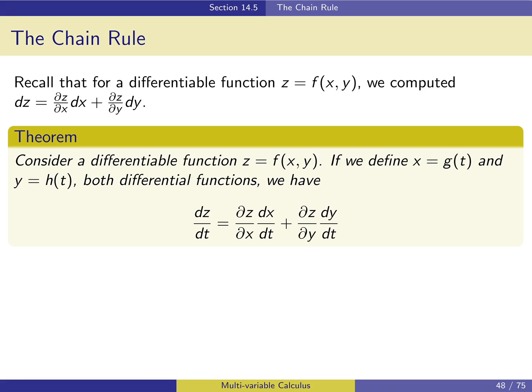Here's the theorem. If z is a function of x and y, and we define x to be a function of t and y to be a function of t, and if these functions are differentiable, then dz/dt equals the partial derivative of z with respect to x times dx/dt, plus the partial derivative with respect to y times dy/dt. Some of these terms are partial derivatives and some are ordinary derivatives, because x and y are one-variable functions. We can think of dz/dt as a single-variable derivative because if we plug g(t) in for x and y, z becomes a single-variable function of t.